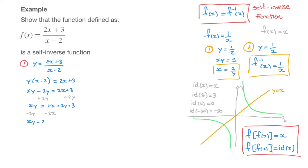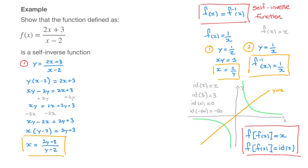Now to make x the subject, I factor x on the left-hand side: x times y minus 2 equals 2y plus 3. Dividing both sides by y minus 2 gives x equals 2y plus 3 over y minus 2. That's step 1 done. In step 2, I swap x and y and define the inverse function. Swapping x and y gives y equals 2x plus 3 over x minus 2, so the inverse function, inverse of f, equals 2x plus 3 over x minus 2.